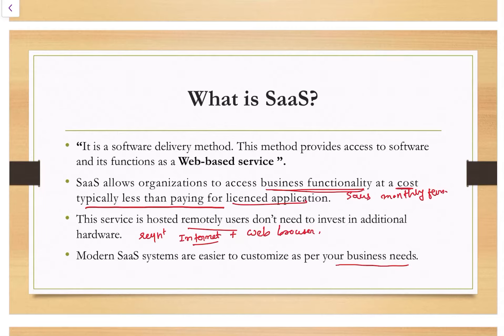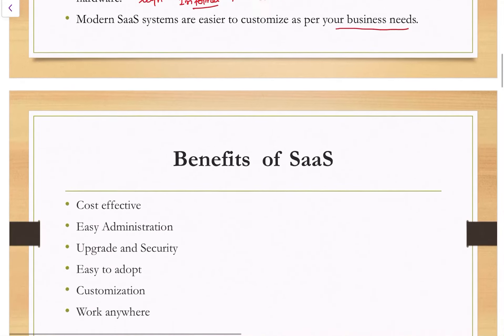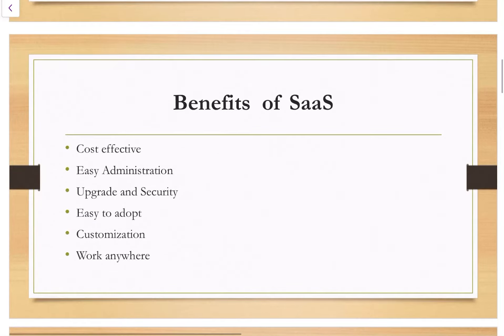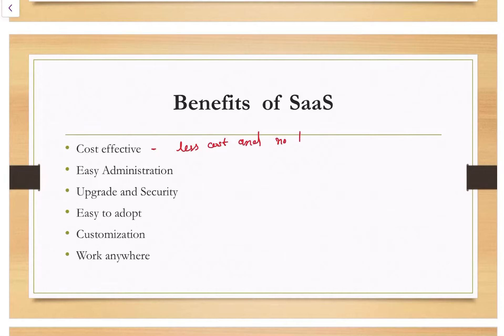Several business process features can also be turned off and on at will. This way, modern SaaS systems are easier to customize as per your business needs. Now, the first benefit of SaaS is that it is cost effective.